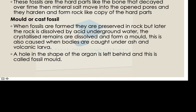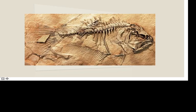There are also mold or cast fossils. When fossils are formed and preserved in rock, the rock itself can later be dissolved by acidic underground water and then crystallized, forming a mold. This also occurs when bodies are caught under ash and volcanic lava, leaving a hole in the shape of the organism — that is what we call a fossil mold. Here is an example showing the fossil mold of a fish species.